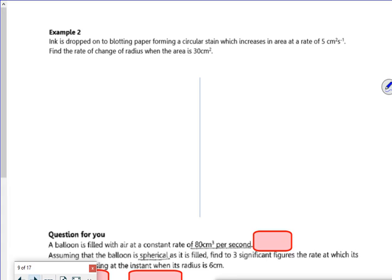Are you ready for the next one then? So it says ink is dropped onto a blotting paper forming a circular stain, which increases in area at a rate of 5 cm² per second.